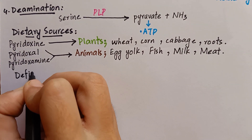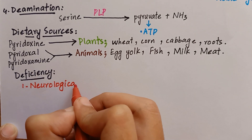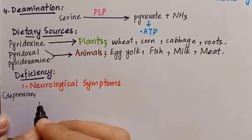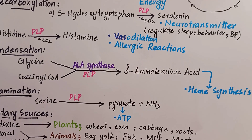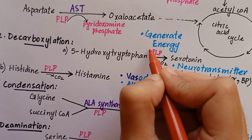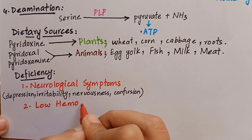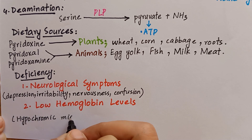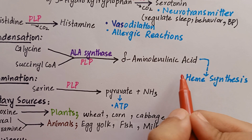Coming to the clinical indications, vitamin B6 deficiency is associated with neurological symptoms such as depression, irritability, nervousness, and mental confusion. These symptoms are related to the decrease in synthesis of neurotransmitters. B6 deficiency also causes a decrease in hemoglobin levels associated with hypochromic microcytic anemia, due to reduction in heme production.